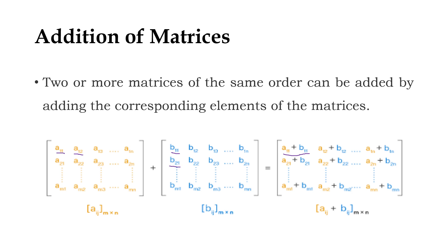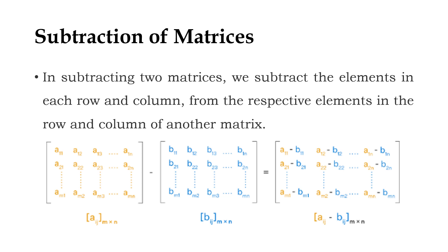We have to add the rows of the first matrix and elements that are in the second matrix column, so that we will be getting the resultant matrix. Likewise, we have to consider the elements in the rows of the first matrix and the elements in the second matrix column. The resultant matrix will be like this. We have to subtract B11 from A11, and the resultant will be like this.